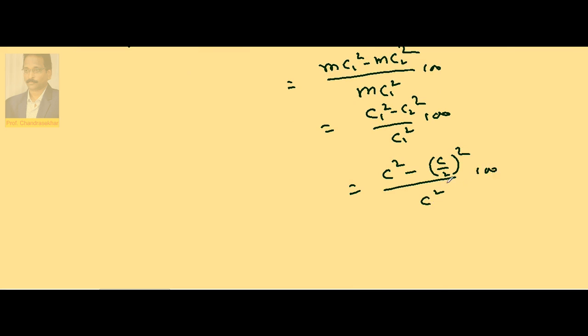C square minus c by 2 whole square by c square into 100. Take c common. So it is 1 minus 1 by 4 into 100, which is nothing but 3 by 4 into 100.